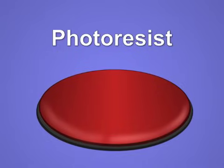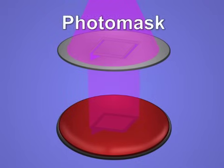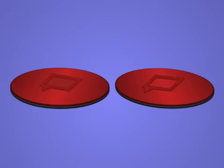The photoresist-coated substrate is then exposed to intense UV light through a precisely patterned stencil called a photomask. Two types of photoresist exist.